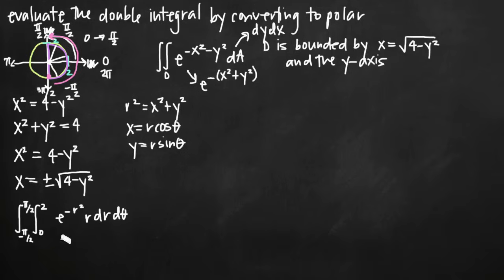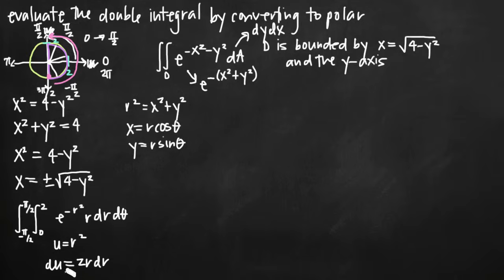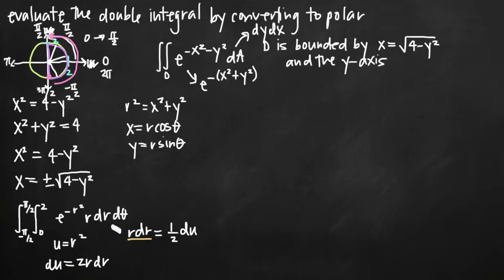The way we'll evaluate it is with u-substitution. We'll set u equal to r squared because we have r squared in our exponent. Taking the derivative, du equals 2r dr. Dividing both sides by 2, r dr equals one half du. We've solved for r dr specifically because we have r dr in our integral, so we can substitute one half du for r dr and cancel that r in one step.